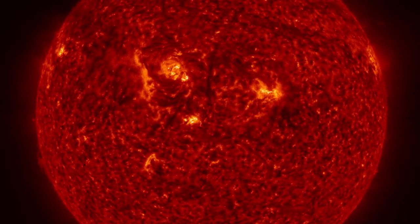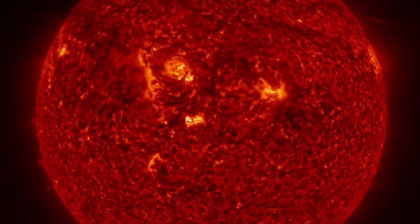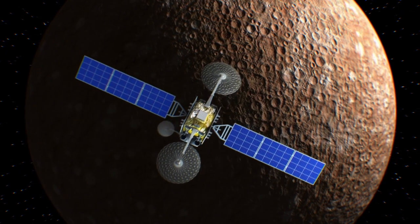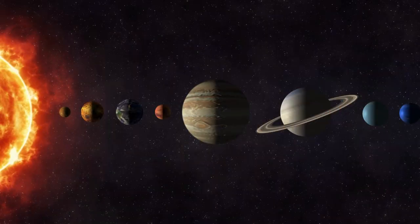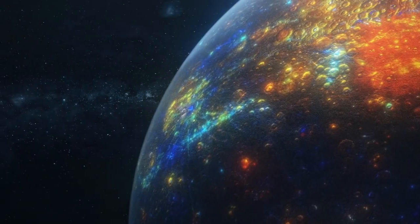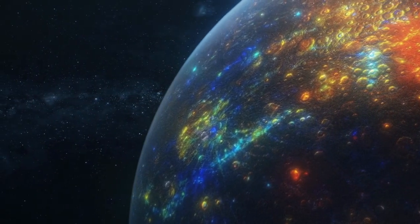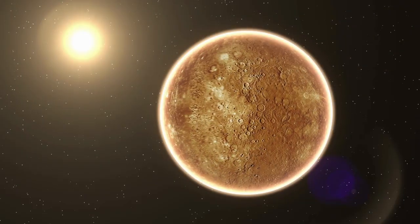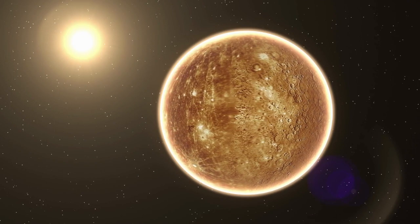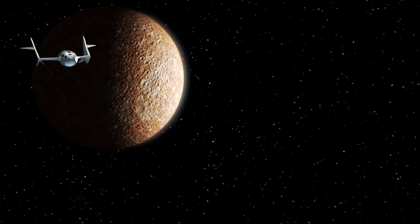Mercury is the smallest planet in our solar system, and it orbits closest to the Sun. It is heavily cratered and has a rocky composition, with a thin atmosphere that is constantly stripped away by solar winds. Despite its small size, Mercury is a geologically active planet, with many of its craters formed by volcanic activity. Due to its proximity to the Sun, Mercury has a short year of just 88 Earth days. It has no moons.